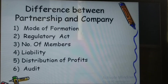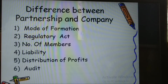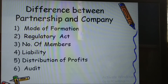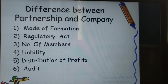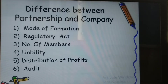The next difference is the regulatory act. Partnership is governed by the Partnership Act 1932. A company is governed by the Companies Act 2013 — all paperwork and workings are carried out according to the Companies Act 2013.